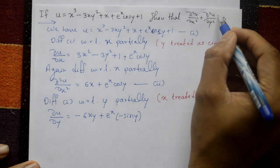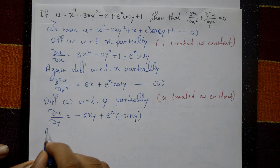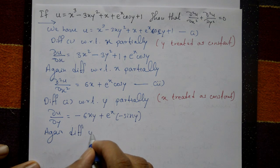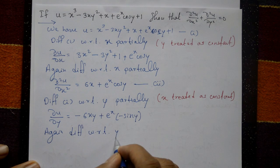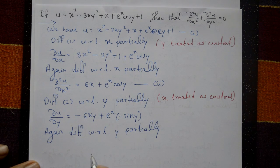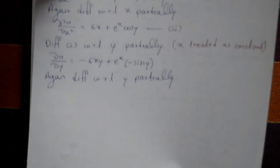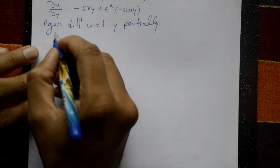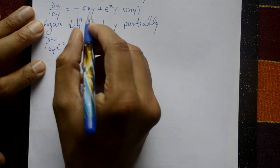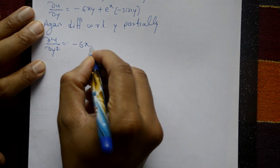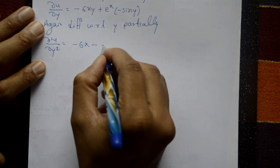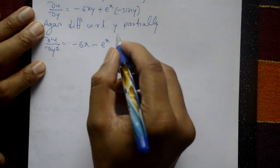We require ∂²u/∂y², so again differentiate with respect to y partially, x treated as a constant. ∂²u/∂y² = minus 6x, and eˣ remains as it is, and differentiating sin y gives cos y. This is equation number 3.